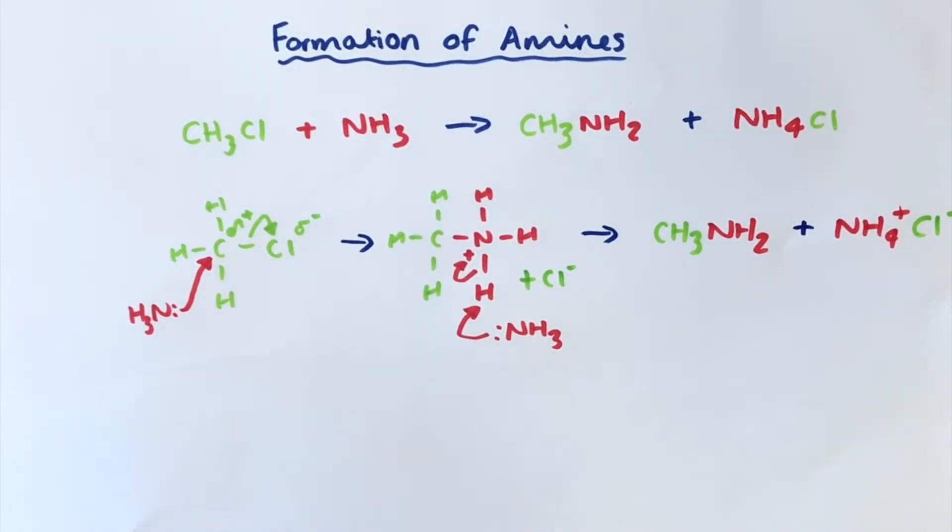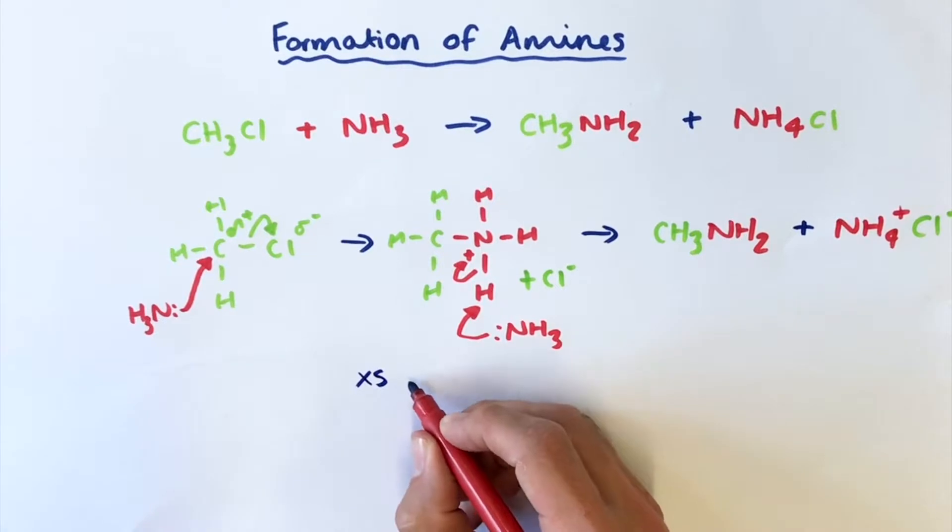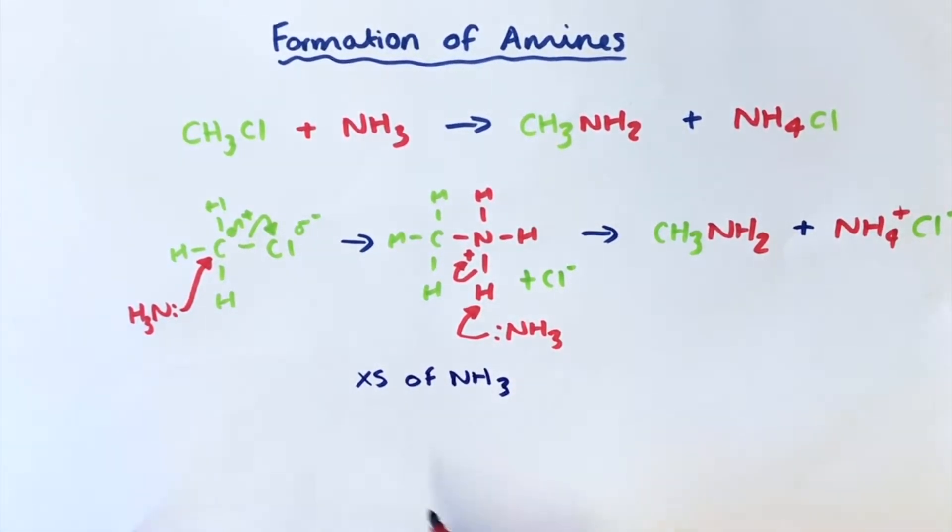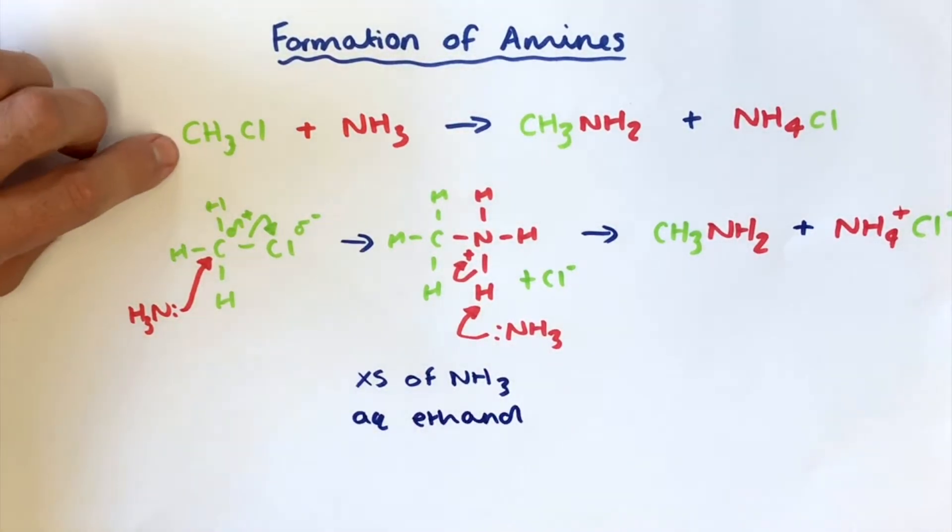Now there's a key thing for this reaction. To allow this part to happen we must make sure that for our conditions we have an excess of ammonia. We're also going to need a solvent for this reaction so we're going to have to use aqueous ethanol for this. Now the solvent is ethanol because we need our halo alkane to dissolve for this reaction.